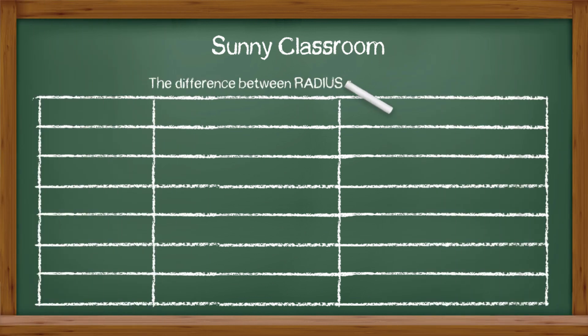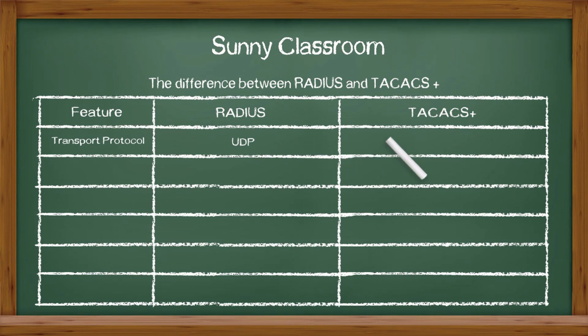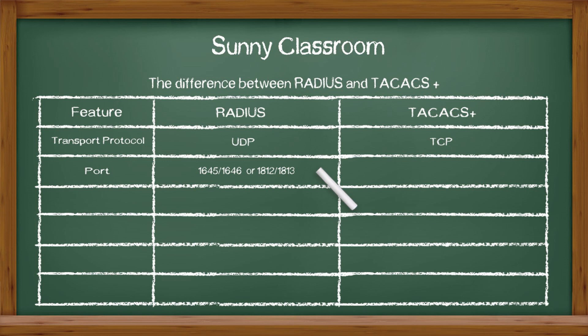Now let's compare RADIUS with TACACS+. At a transport layer, RADIUS uses UDP, while TACACS+ uses TCP. RADIUS uses two pairs of UDP port numbers: 1645 and 1646, or 1812 and 1813. TACACS+ uses port number 49. That's it — very simple.